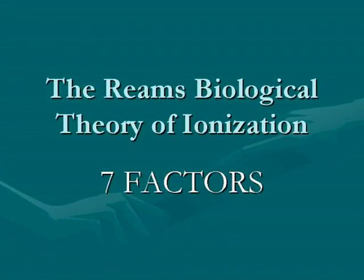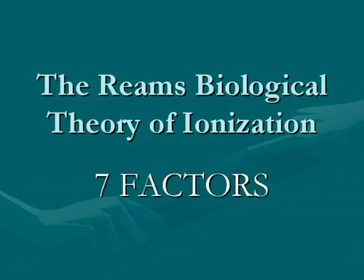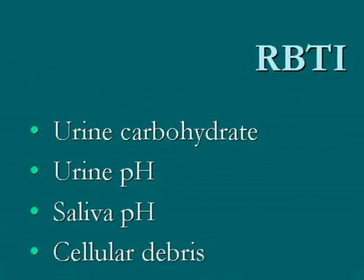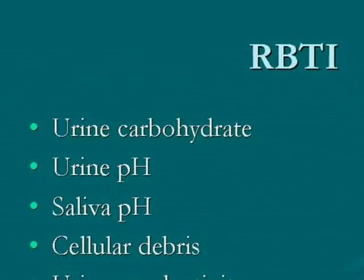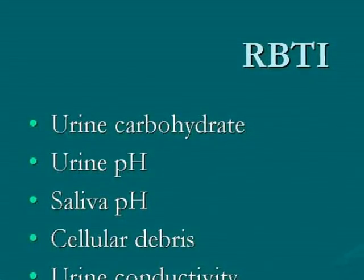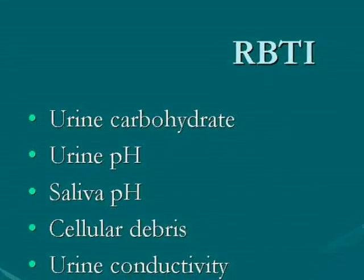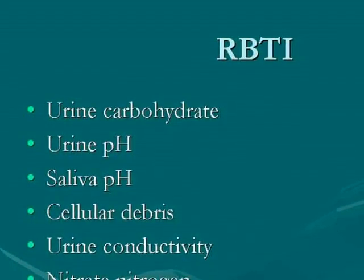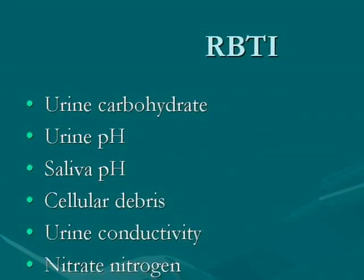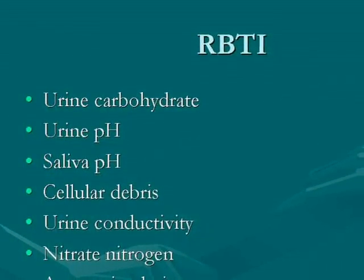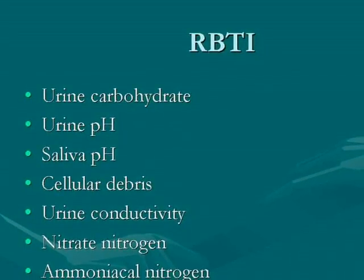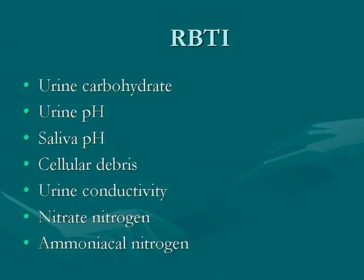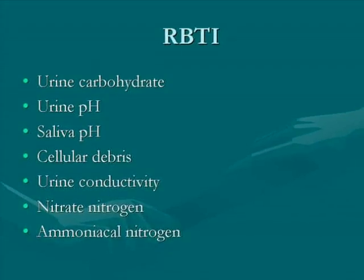This short film clip has been prepared to help lead you through Riem's Biological Theory of Ionization analysis of urine and saliva. Accurate analysis is the very heart and soul of the RBTI formula. We're going to be going through how to measure the urine carbohydrate expressed as BRICS, the urine pH, the saliva pH, the cellular debris — which sometimes is called albumin — meaning the cloudiness of the urine and how many dead cells are being washed out of the body. We'll also measure the urine conductivity, which tells us the blood conductivity, and we'll be very curious about the nitrate nitrogen and ammonical nitrogen in the urine.